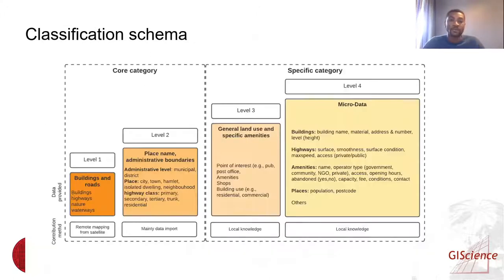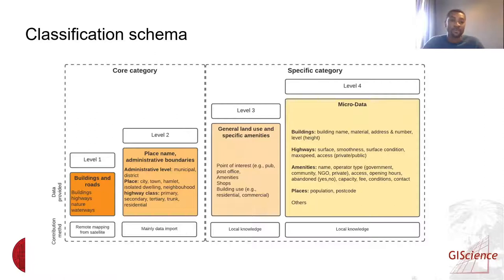Together with the community working groups, we developed this classification schema where broadly we group elements into a core category and a specific category. The core category contains those that could be mapped across all projects or all mapping activities in OSM — for example, buildings and highways.